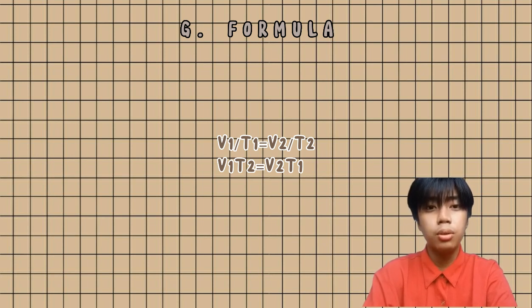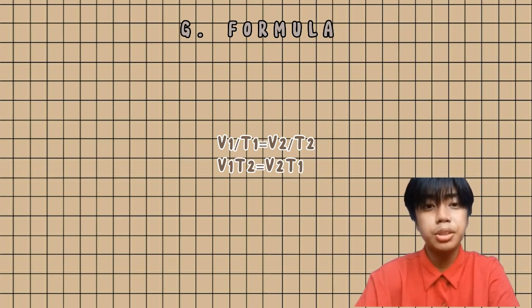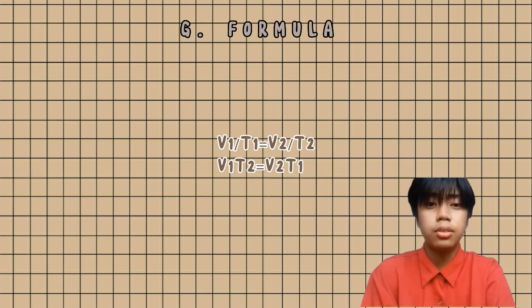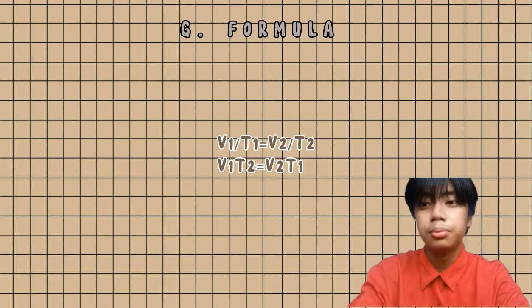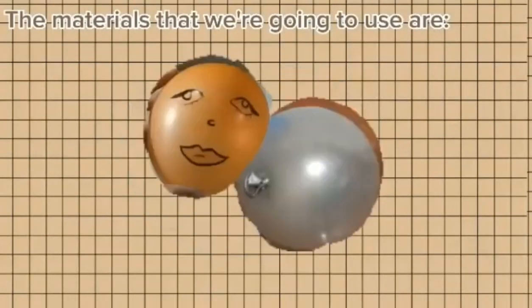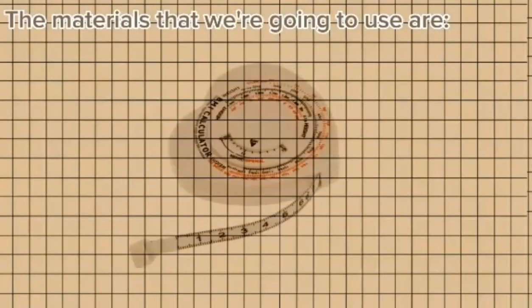Initial volume times final temperature is equal to final volume times initial temperature. The materials that we're gonna use are a ball, an inflated balloon, and a tape measure. Experiment time!